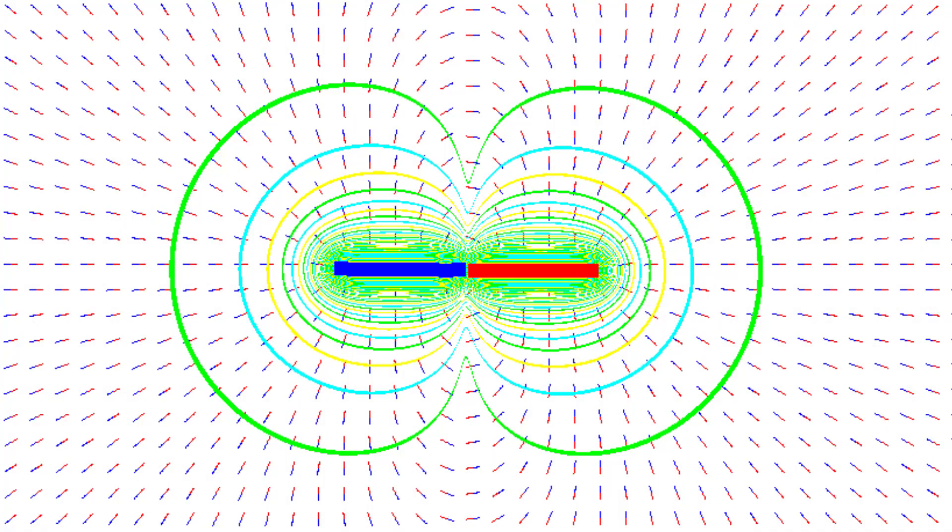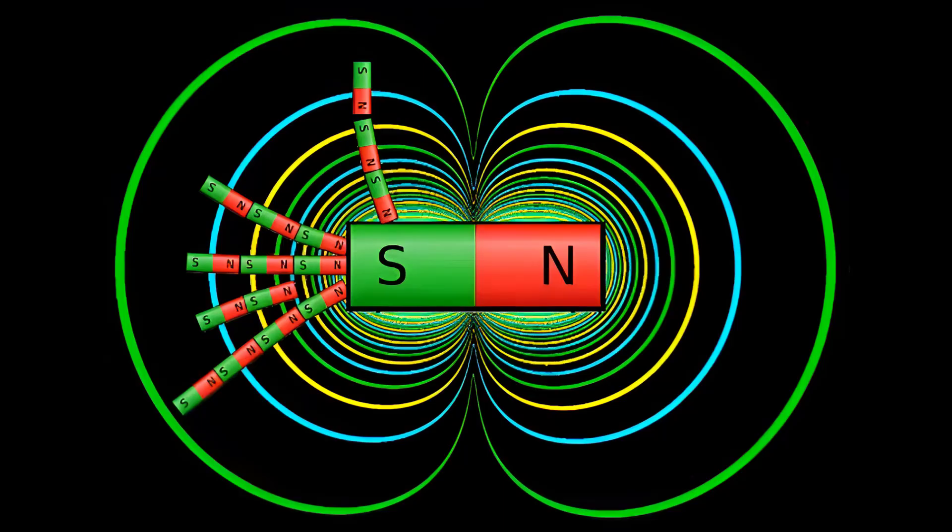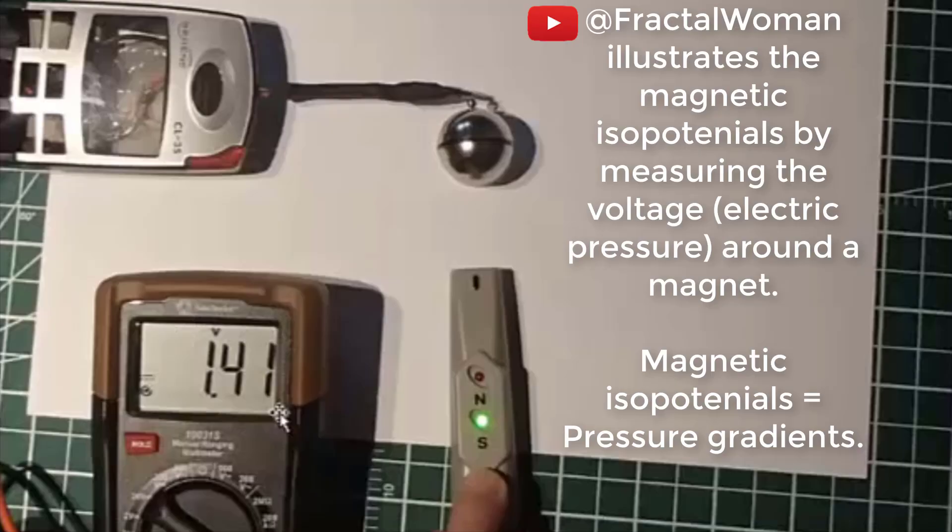The magnetic field lines can be thought of as many smaller magnets surrounding a bigger magnet. The isopotential lines are perpendicular to the magnetic field. Fractal Woman illustrates the magnetic isopotentials by measuring the voltage or electric pressure around a magnet.